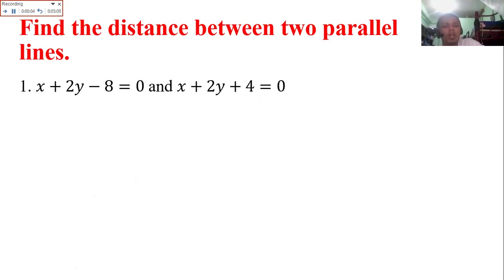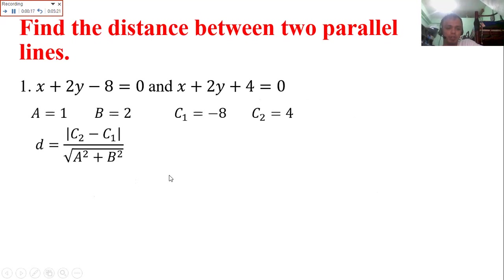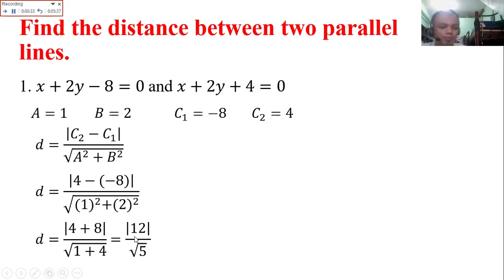Find the distance between two parallel lines. For number 1: x plus 2y minus 8 equal to 0 and x plus 2y plus 4 equal to 0. This is easy. Your A is 1, B is 2, C sub 1 is negative 8, C sub 2 is 4. Substitute. We have 4 minus negative 8, all over 1 squared and 2 squared. 4 minus negative 8, or 4 plus 8, equals 12. The square of 1 is 1, the square of 2 is 4. Absolute value of 12 is 12.